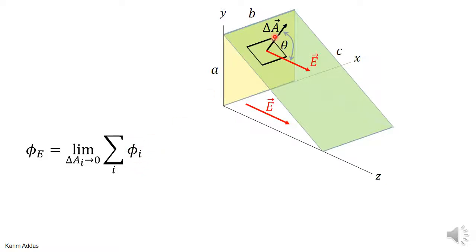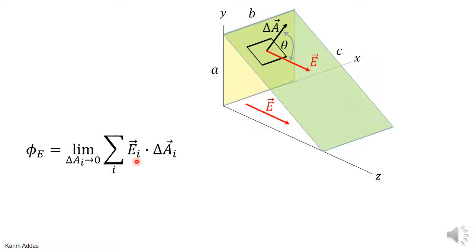We sum over all the area elements and take the limit as the size of each element goes to zero — the same process for every surface. The electric flux through each area element is E dotted into the area element.